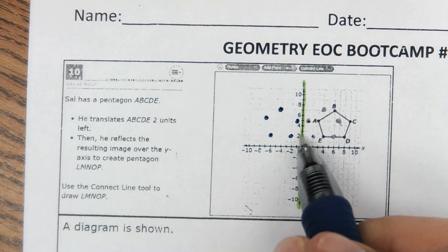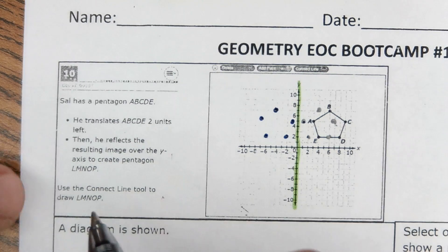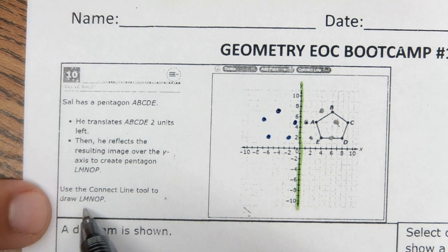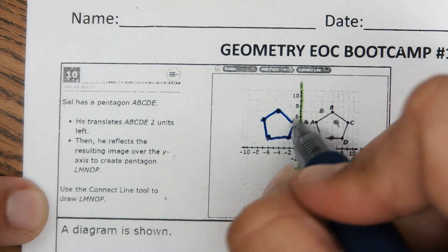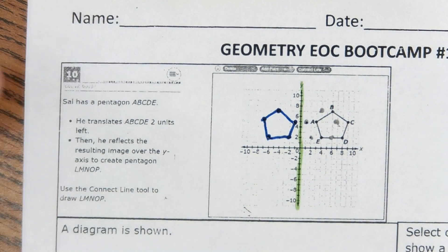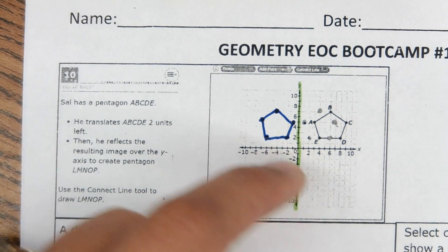So again, I just took each point and put it the same distance from the y-axis on the other side. And then it says use the connect line tool to draw this new shape, L-M-N-O-P. Okay, cool. We connect them and make the new shape. These points over here aren't part of this, so I might erase them just so it doesn't count it wrong or something.